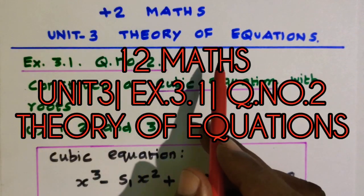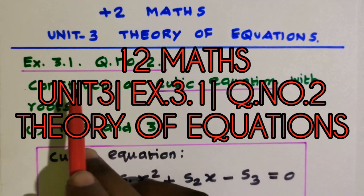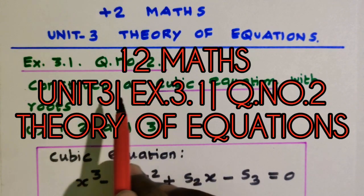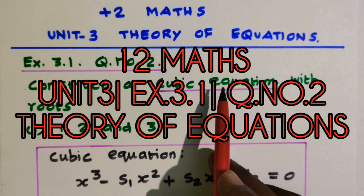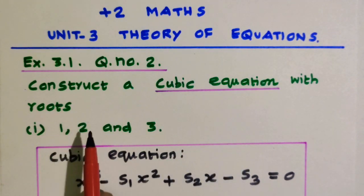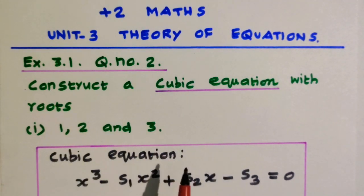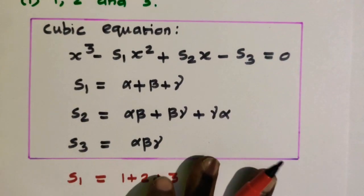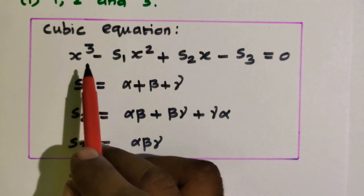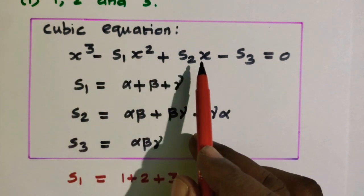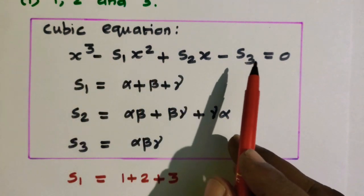Plus 2, Unit 3, Theory of Equations, Exercise 3.1, Question 2: Construct a cubic equation with the roots. Subdivision 1: roots are 1, 2, and 3. The cubic equation form is x cube minus s1 x square plus s2 x minus s3 equals 0.